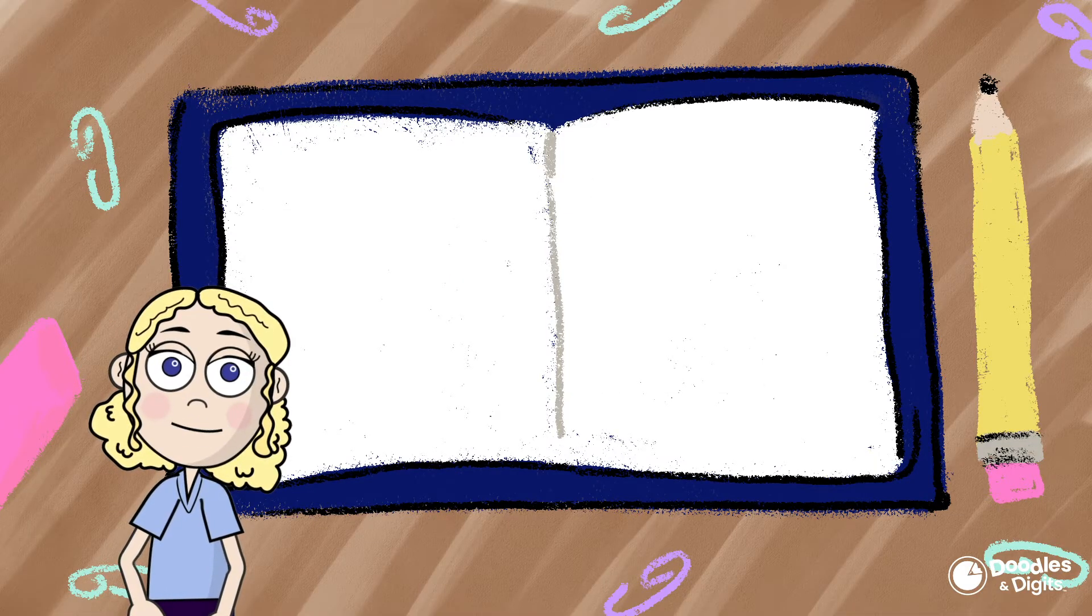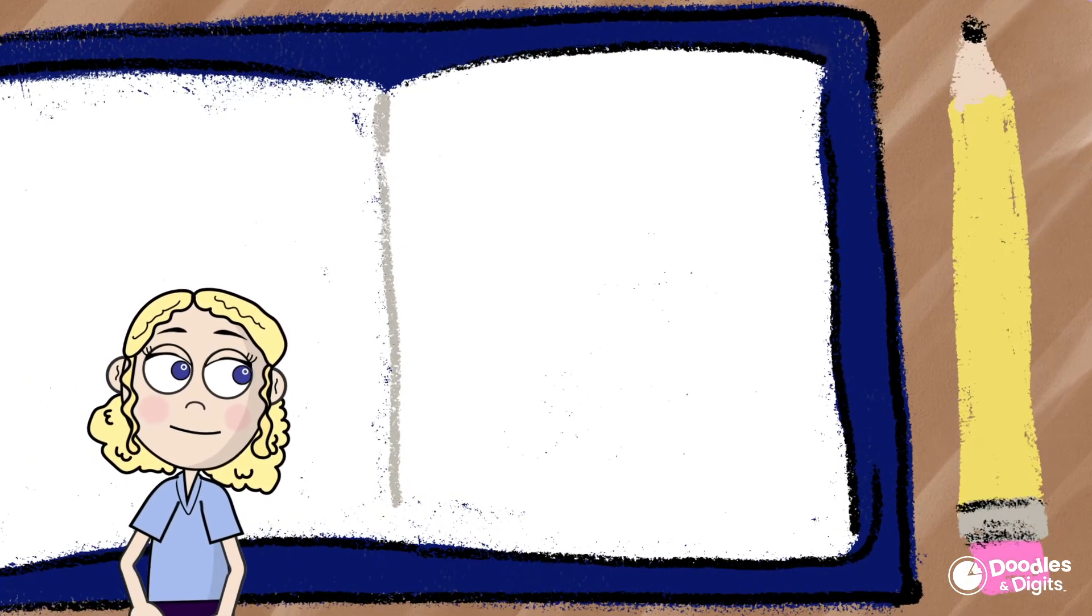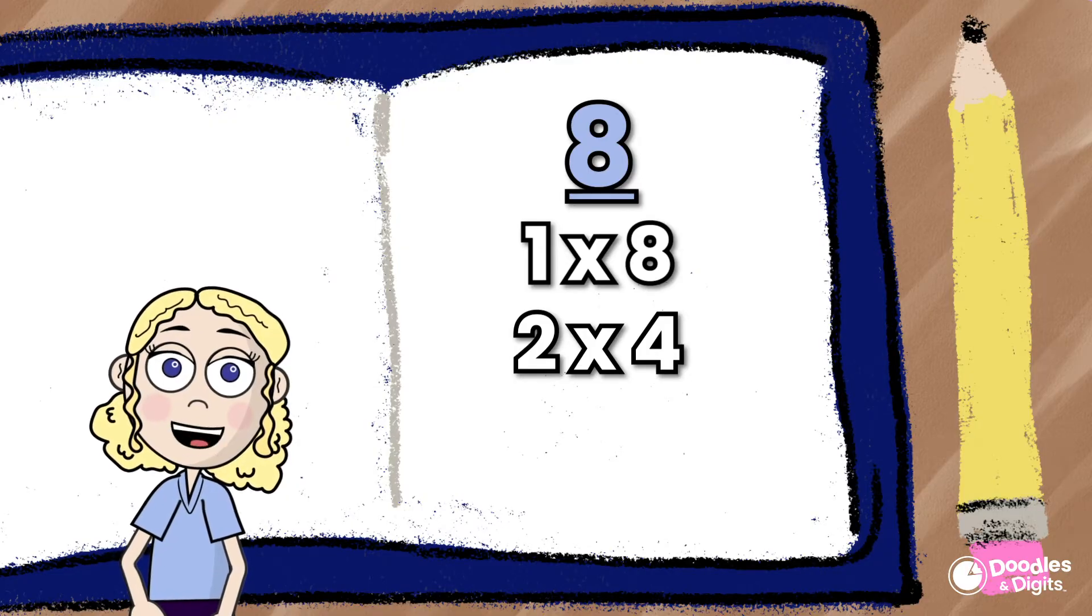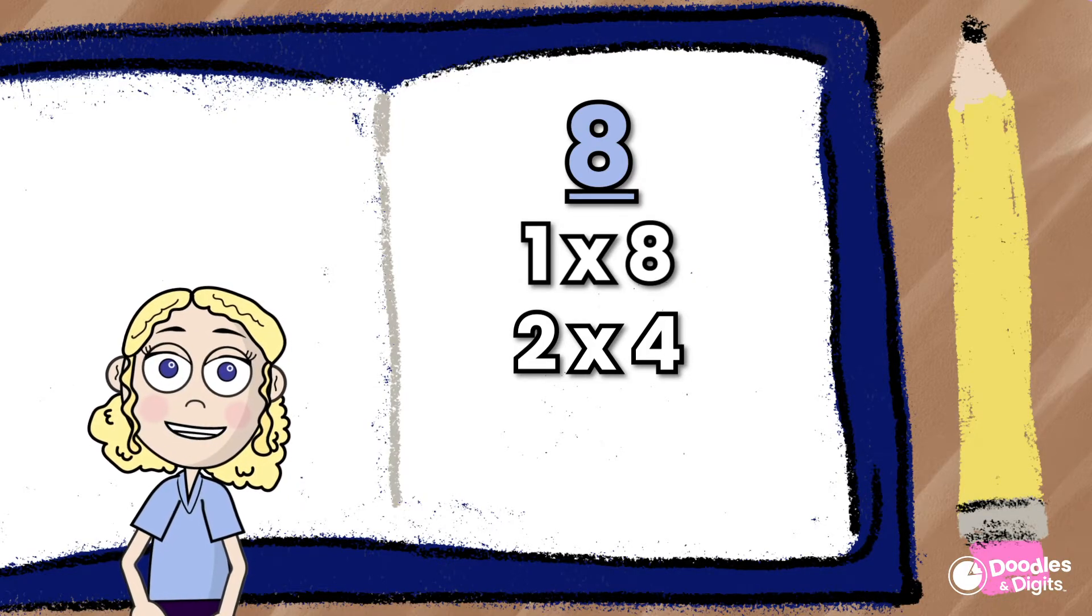Look at this example here. If we are talking about the number 8, the factors of the number 8 are 1 and 8 and 2 and 4.